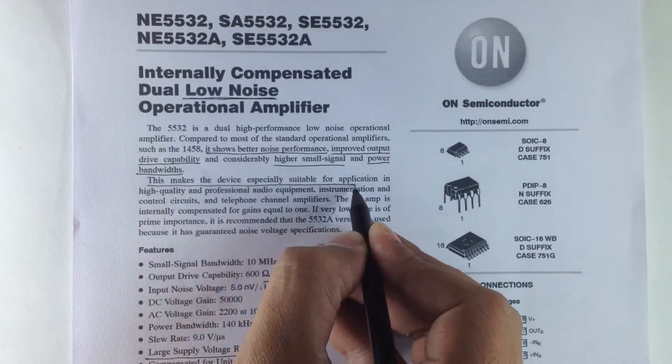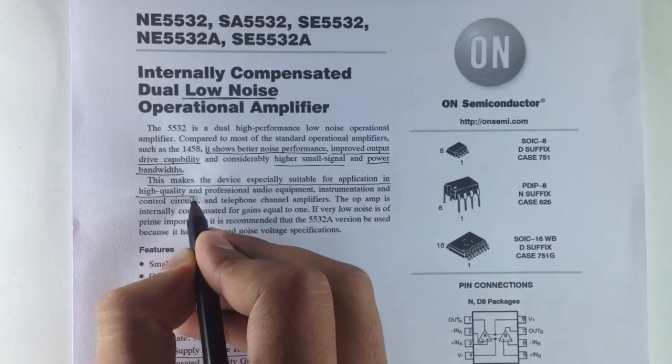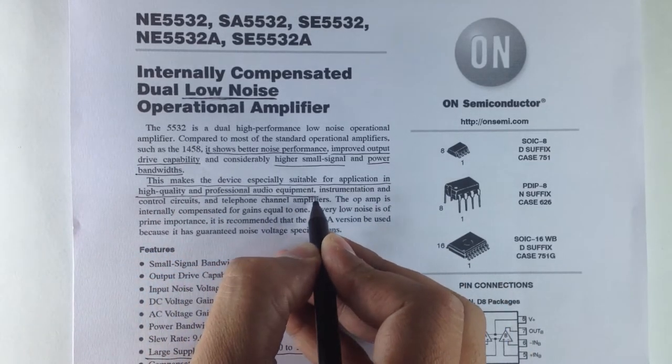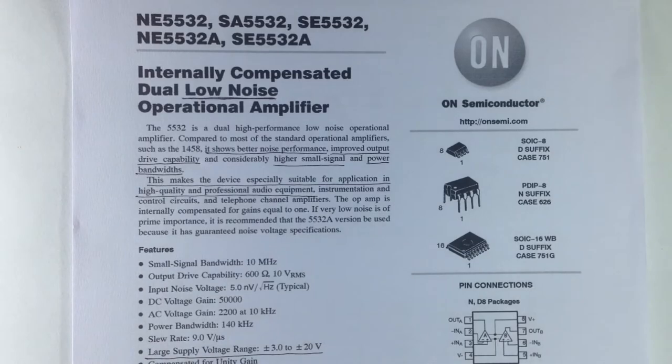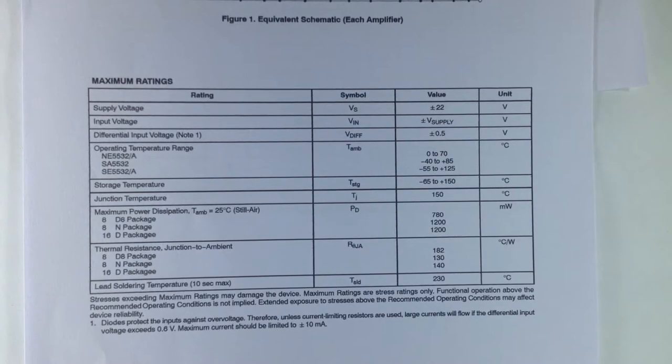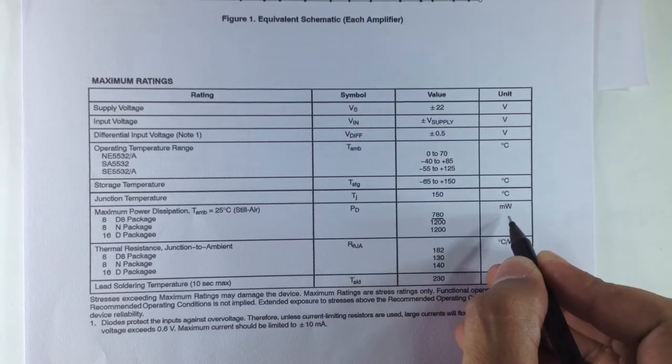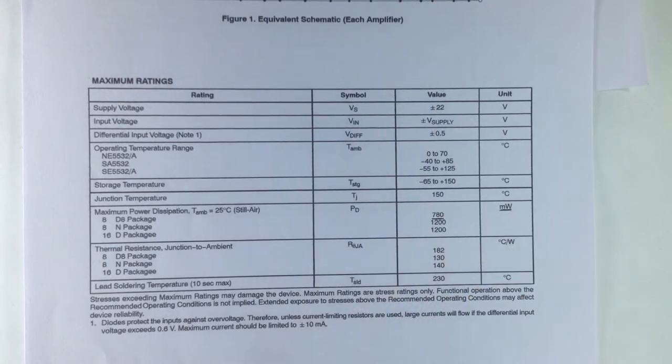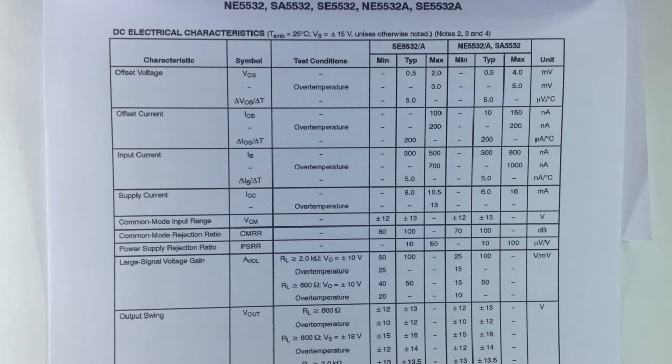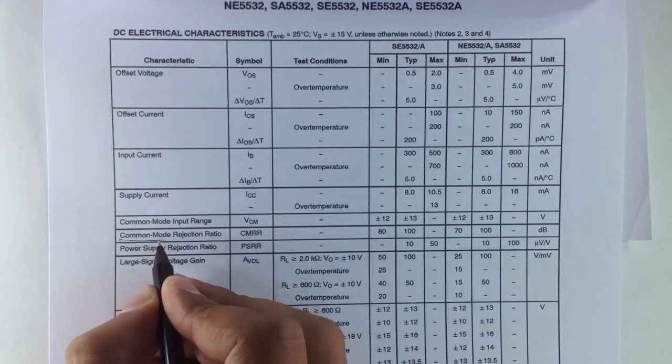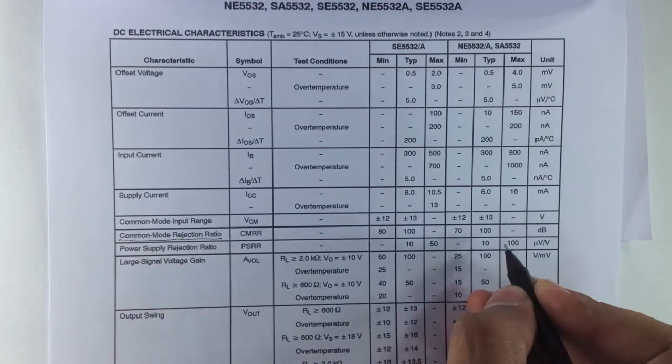It has a maximum power dissipation of 780 milliwatts, which is enough to drive small 16 ohm and 32 ohm speakers directly. It also has a CMRR of 100 decibels.